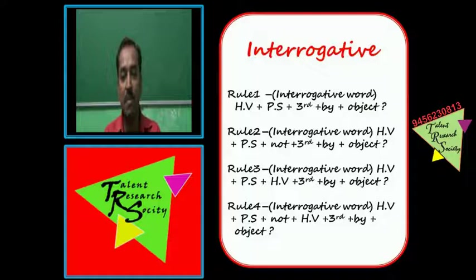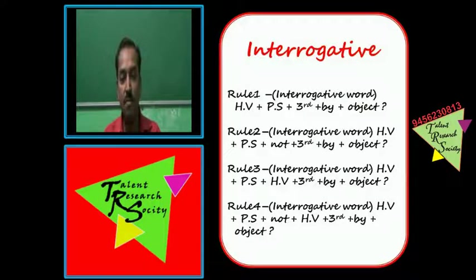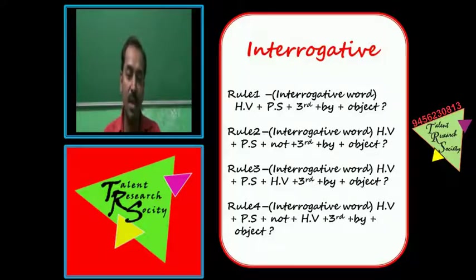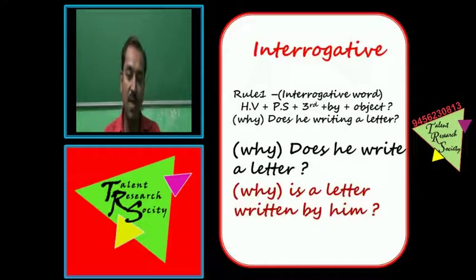Now interrogative. Interrogative mein mostly rule assertive ki tarah hai, 'who' wale ko chhoḍ ke. Rule 1: Interrogative word + helping word + passive subject + third form + by + object. Rule 2: Interrogative word + helping word + passive subject + not + third form + by + object. Rule 3: Interrogative word + helping word + PS + helping word + third form + by + object. Rule 4: Interrogative word + helping word + PS + not + helping word + third form + by + object.